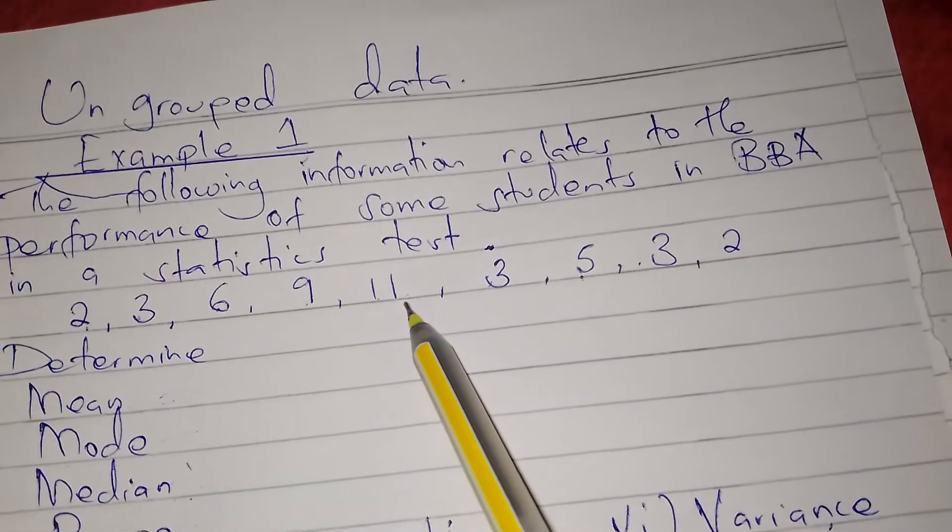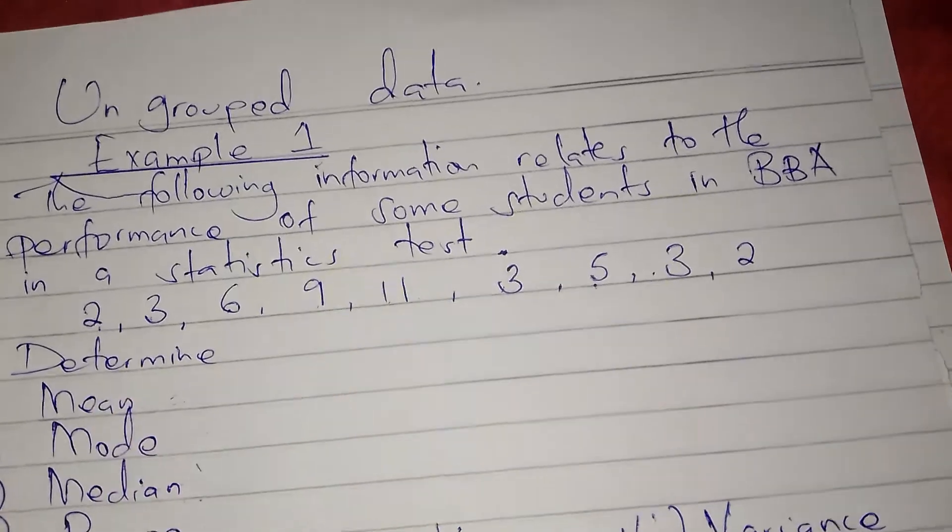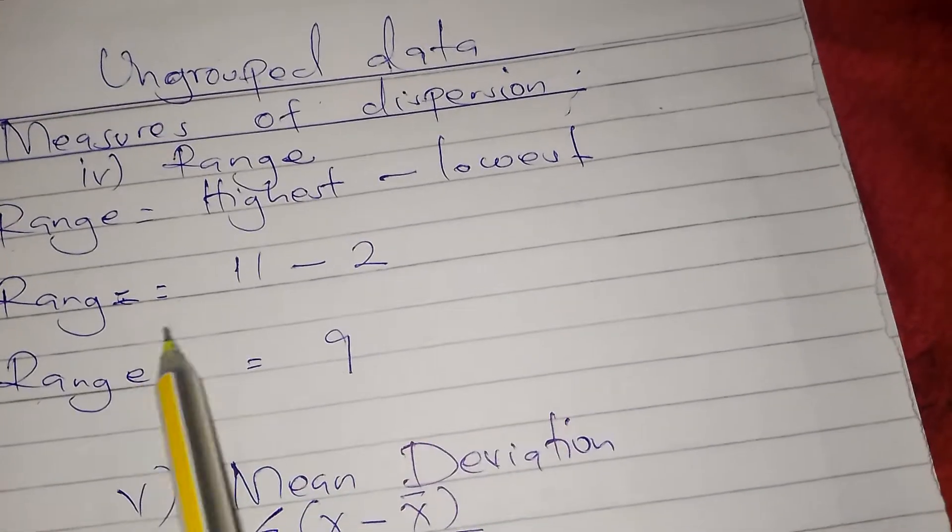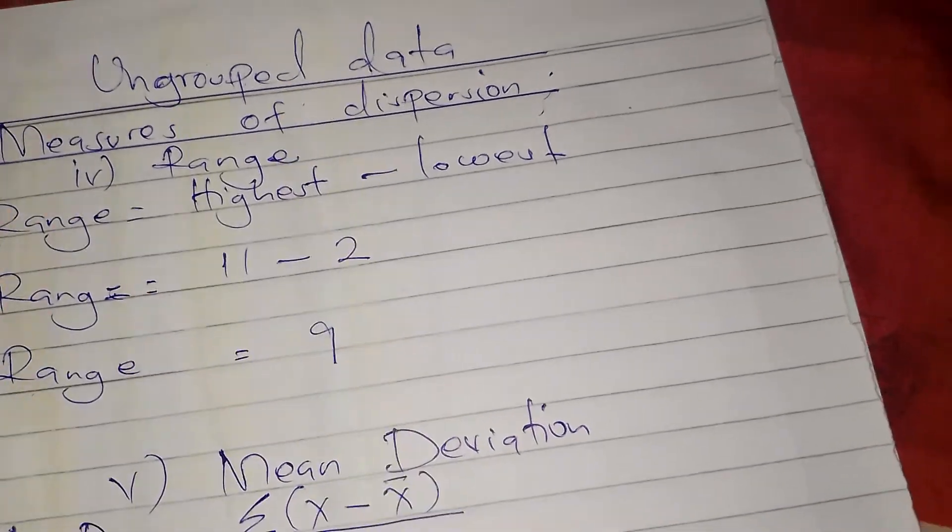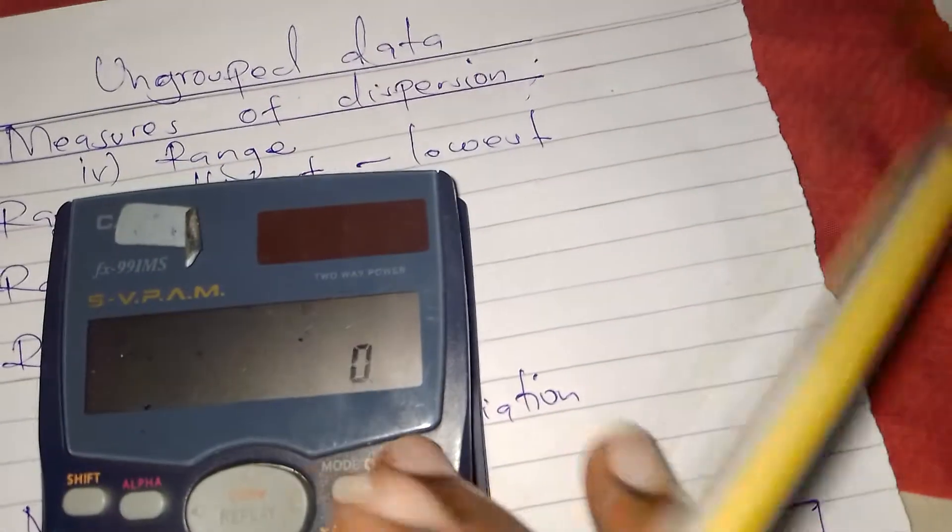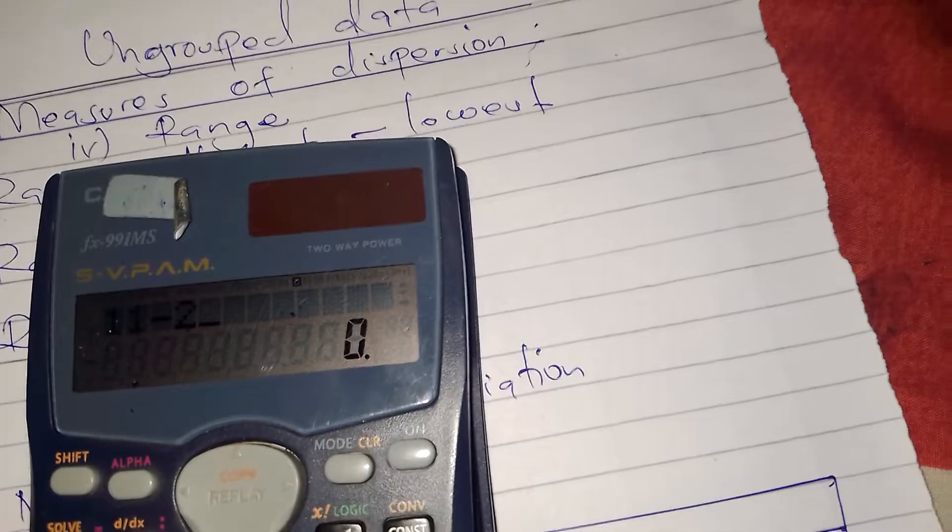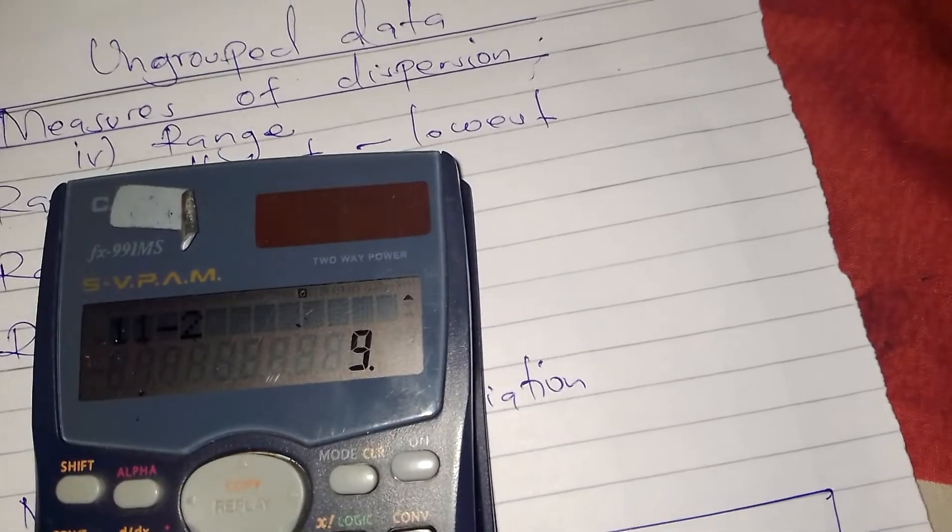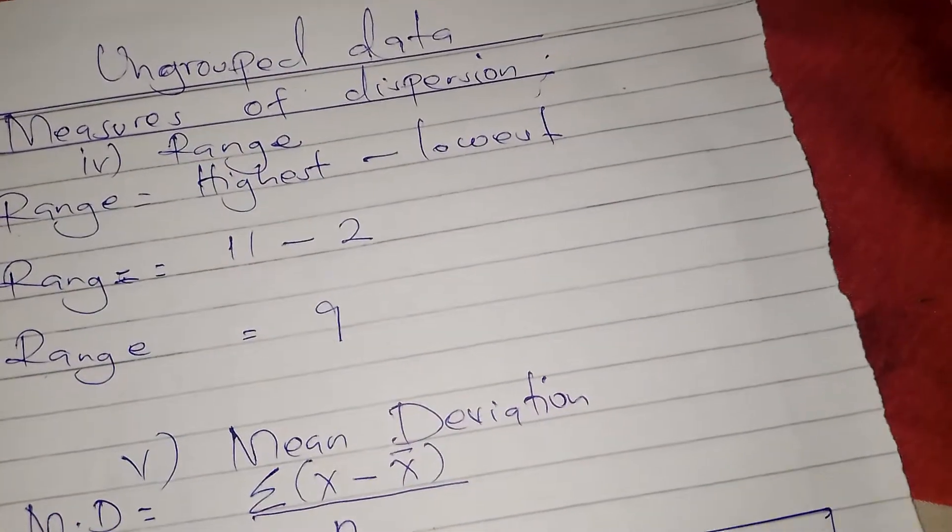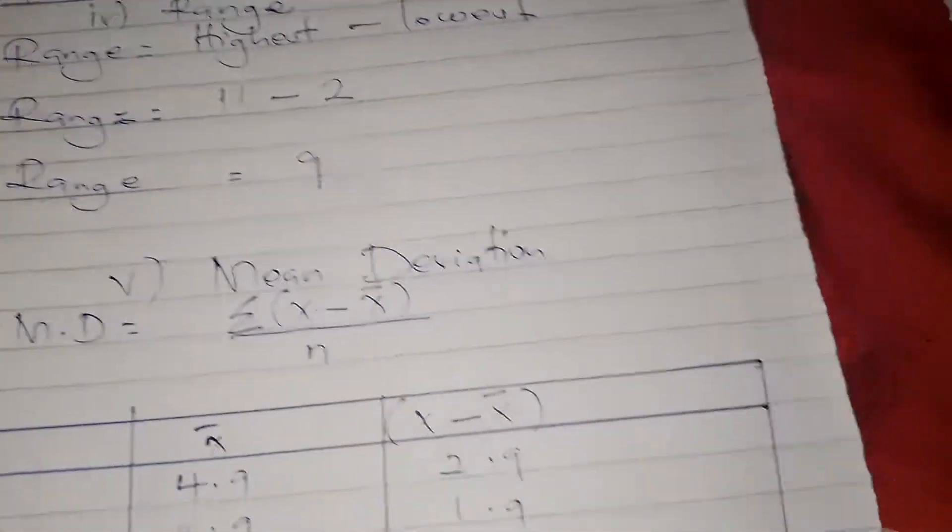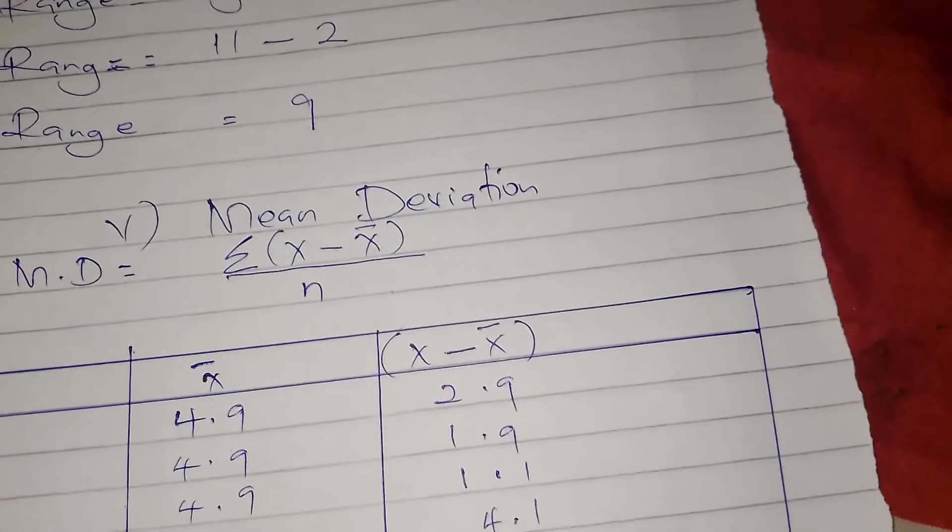So range is 11 minus 2. We put it on the calculator, 11 minus 2, we get 9. So our range is 9. Then we go to the next measure of dispersion which is mean deviation.